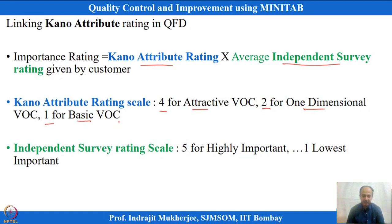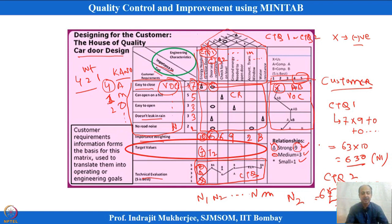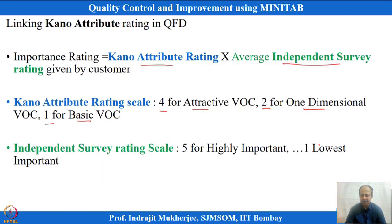We are interested in attractive, one-dimensional, and basic categories, with ratings from 4 to 1, multiplied with survey ratings on a scale of 1 to 10. For example, 7 × 9 = 63, multiplied by importance rating 10 = 630, and multiplied again by 4 for an attractive VOC gives 2520. This is the Kano model integration in brief — more can be studied in books.